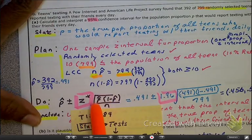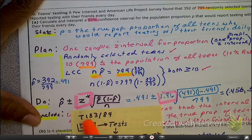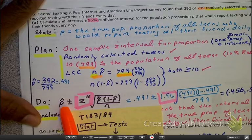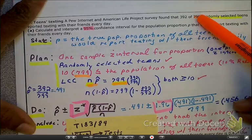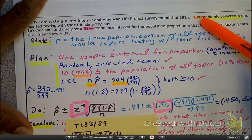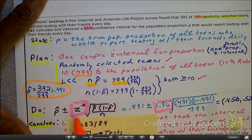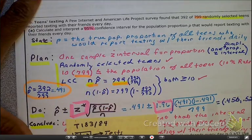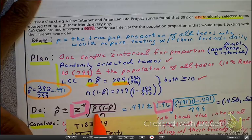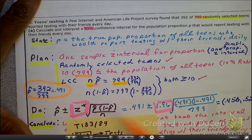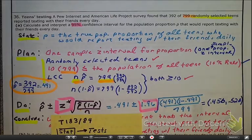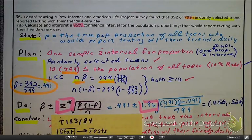Remember, this is our yucky formula, in which we know we have p-hat, which is determined from 392 divided by 799. Z-star is based on that 95% confidence interval, and it is going to be 1.96 from our chart. And our p-hat is the probability of it happening minus the probability of it not happening, over the sample size. We could do this by hand, but there's an easier way.